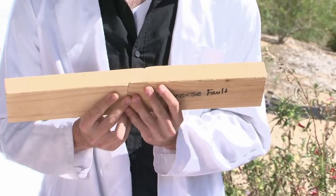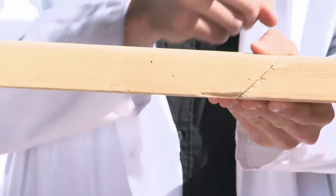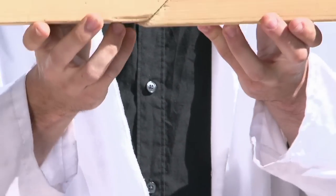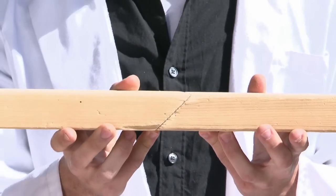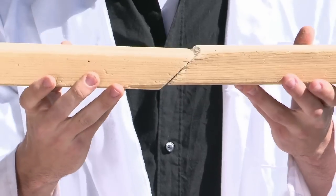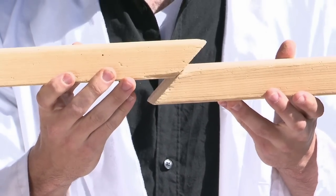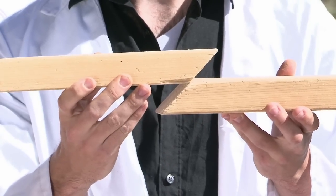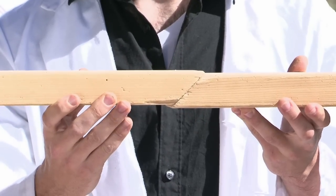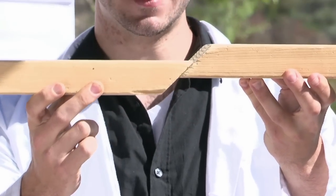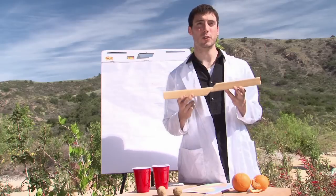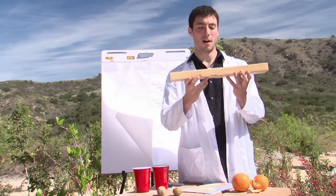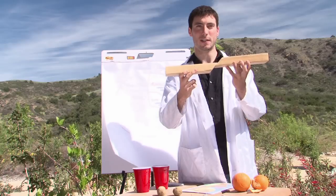You have what's called the hanging wall — the one that goes up — and the foot wall that goes down. These are the two areas of rock that meet at a fault. When they push together, that is called a thrust fault — it thrusts up, which is a good way to remember it. When they pull apart, the hanging wall slides down the foot wall; that's called a normal fault. It goes with gravity, so it seems kind of normal that way.